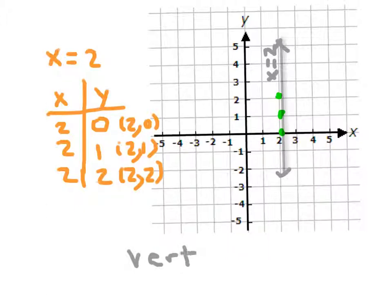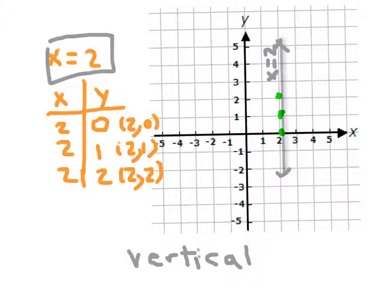Now you've seen both a vertical line and a horizontal line. Notice: a vertical line has the equation x equals some value — for instance, x equals 2. Or this vertical line would be x equals negative 4. For any value of y, say 4 or negative 2, x would still be negative 4. Vertical lines: x equals that number.